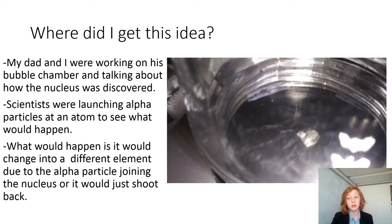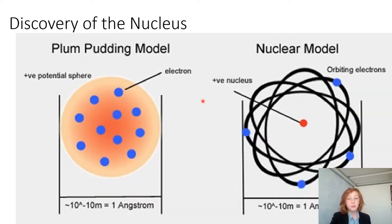What we did discover was we would shoot alpha particles at an atom and see what would happen. It would miss most of the time because an actual atom is 99% empty space. But this is what we thought the atom was, the plum pudding model, sort of like a blob with a bunch of circles in it.